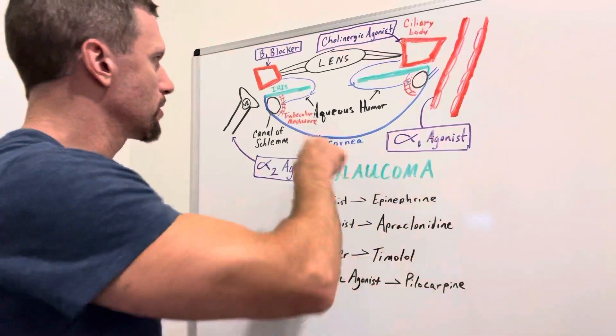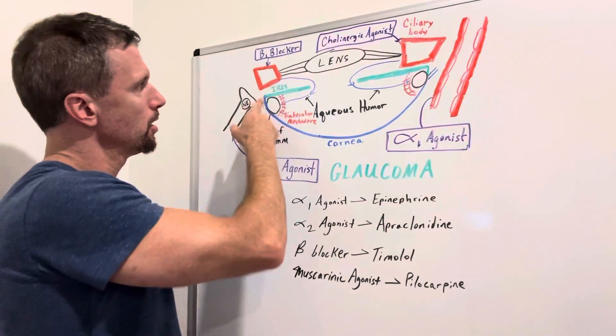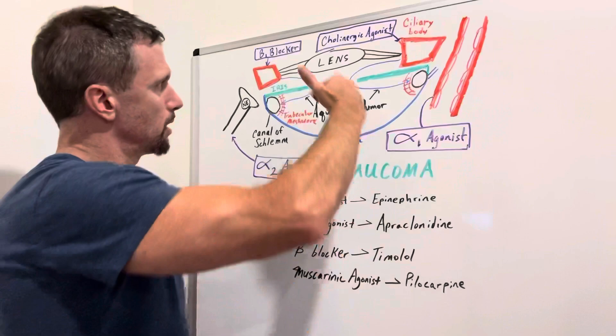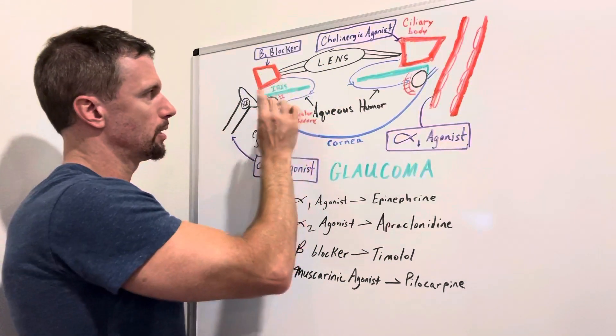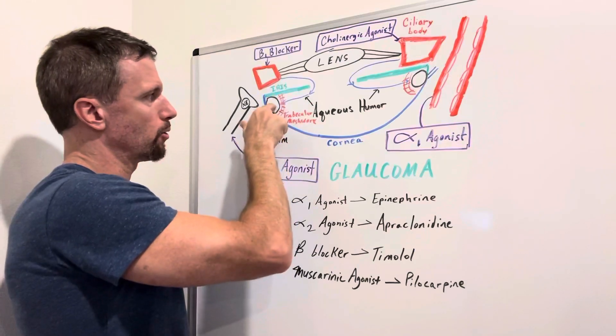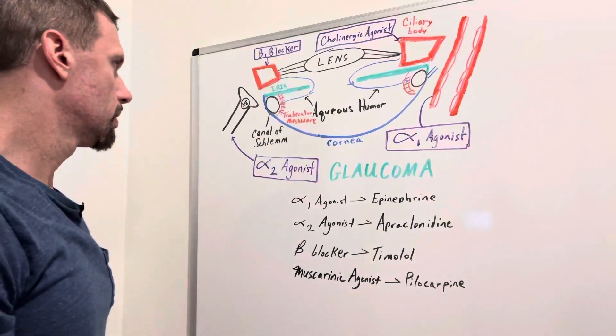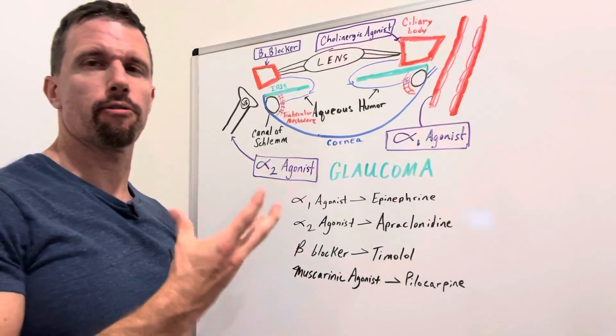Other than that we have these little canals over here. This angle right here is called the iridocorneal angle because the irido comes from the iris, corneo from the cornea and together they form that angle. And right there we have the canal of Schlem. So that's where a lot of the aqueous humor will flow.